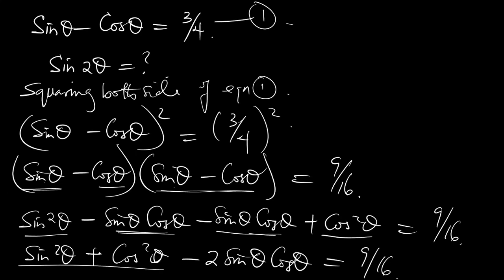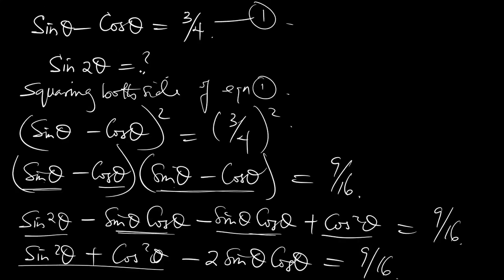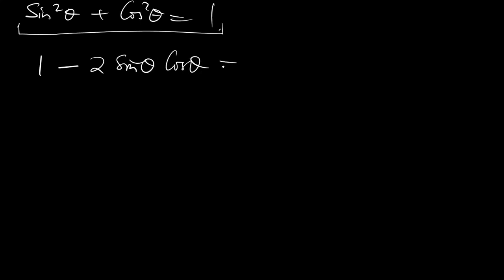According to the trigonometric identity, sin squared theta plus cos squared theta is equal to 1. So we replace that expression with 1. This is the trigonometric identity we need to apply here. We now have 1 minus 2 sin theta cos theta equal to 9 over 16.